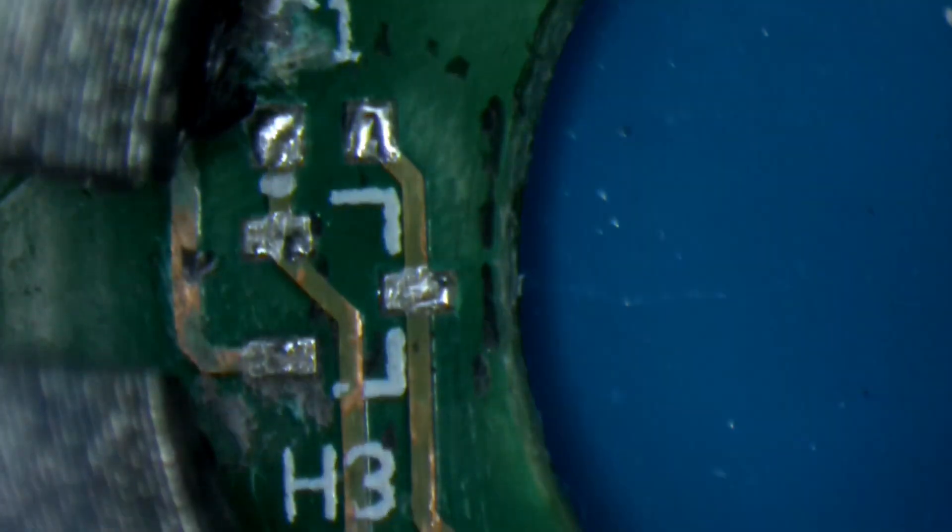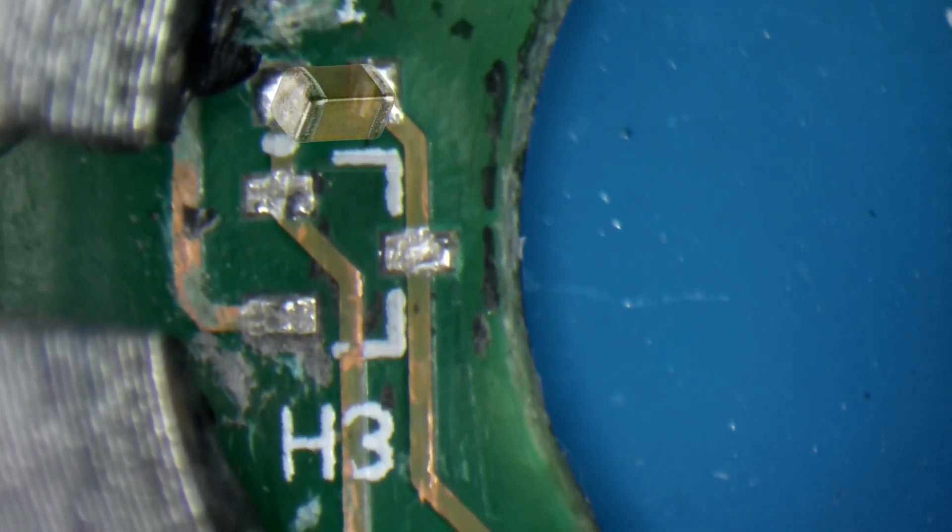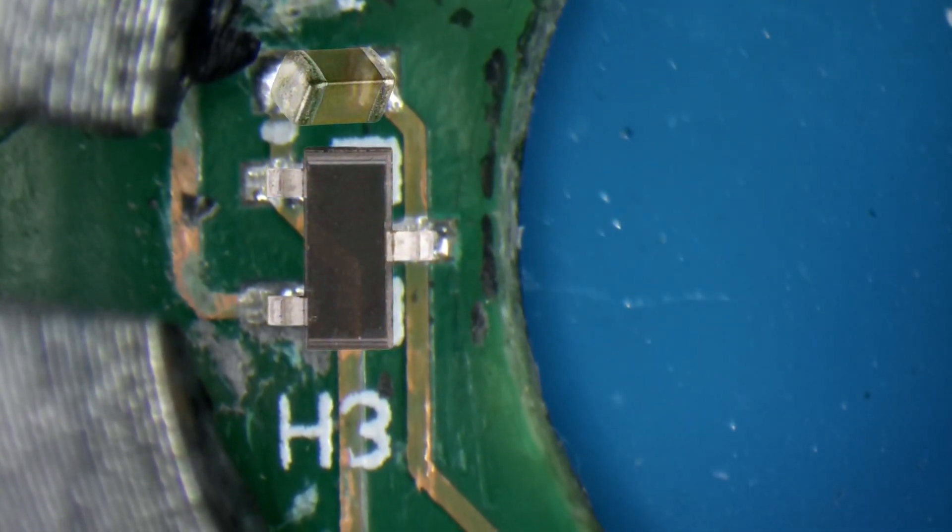Under the microscope, we can see that it is in fact two components, with marking C1 for a capacitor, and H3 for a Hall effect sensor.